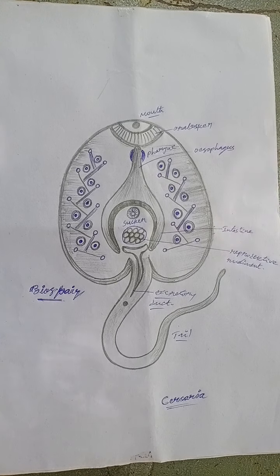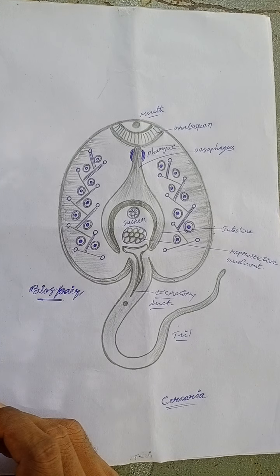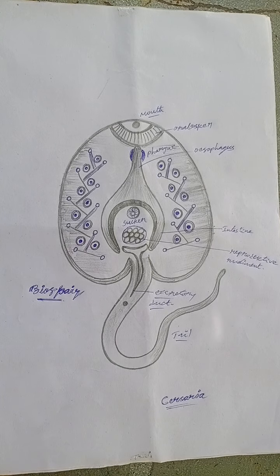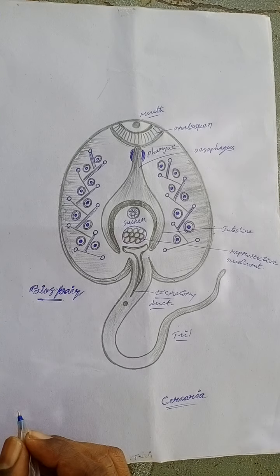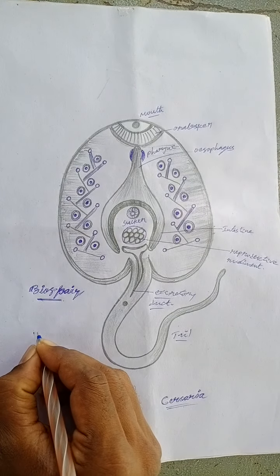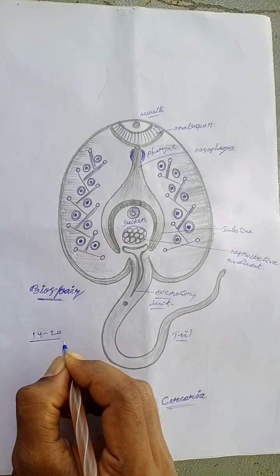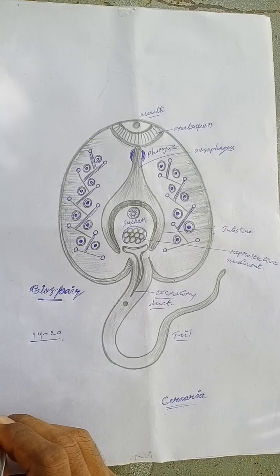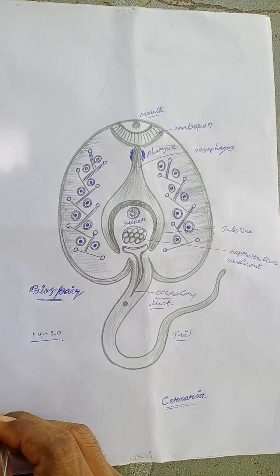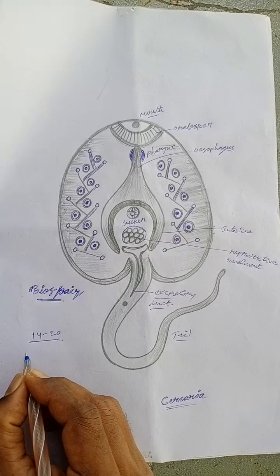Let us see what are the identification characters or comments. Each redia produces 14 to 20 Cercaria larvae, and after leaving the body of redia, they enter into the digestive glands of snails.